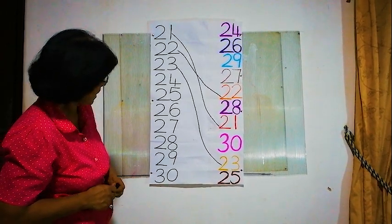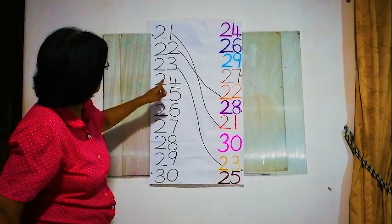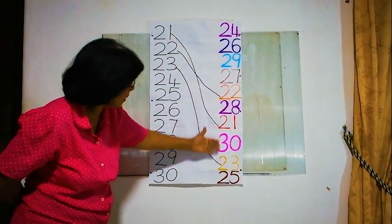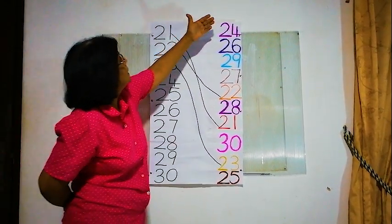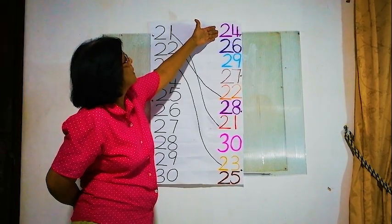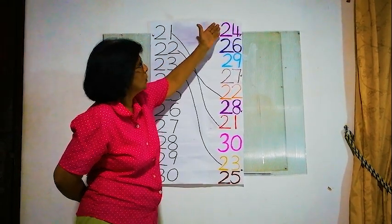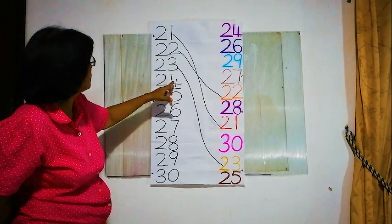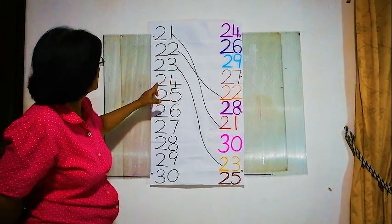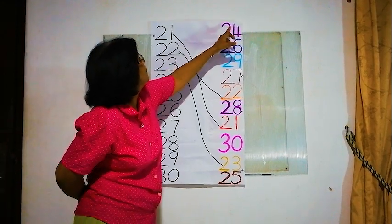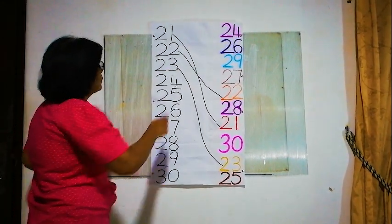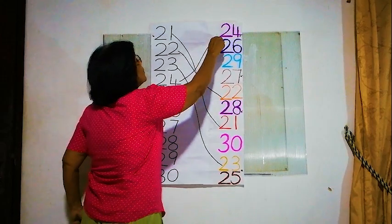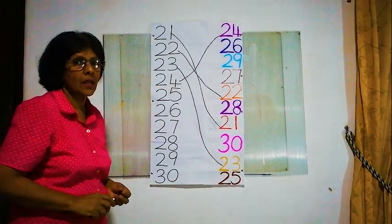We go to the next number: 24. Where is 24 from this side? Yes — the first number is 24. We are searching number 24, and here it is — 24. We are matching 24 and 24. Correct? Yes!